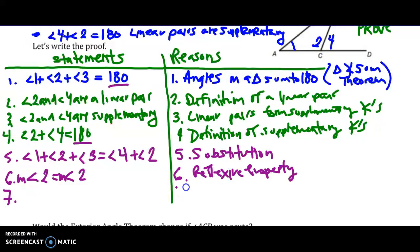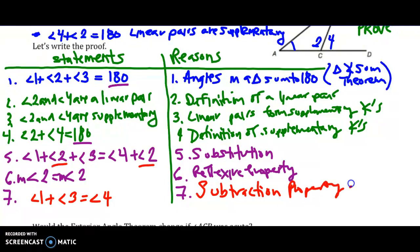So 7: in order to get what we're trying to prove, which will go on our last line, which is angle 1 plus angle 3 equals angle 4, I need to subtract angle 2 from both sides. So that's subtraction. If you take two things that are equal and you subtract an equal amount, which is in step 6, from both sides, the results are still equal. That's what this Subtraction Property of Equality says.